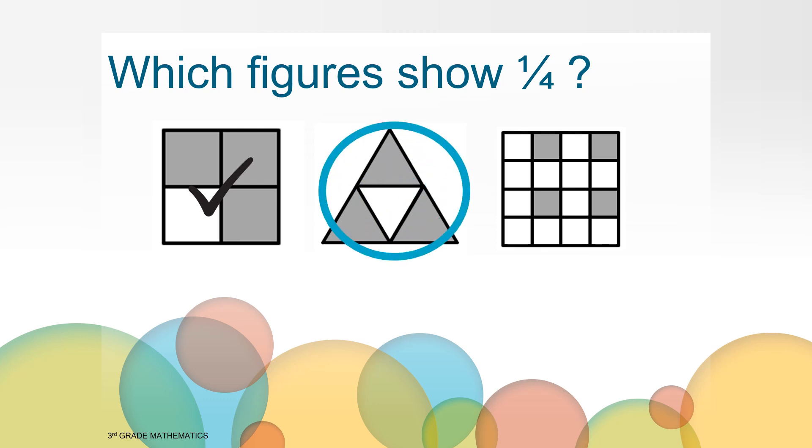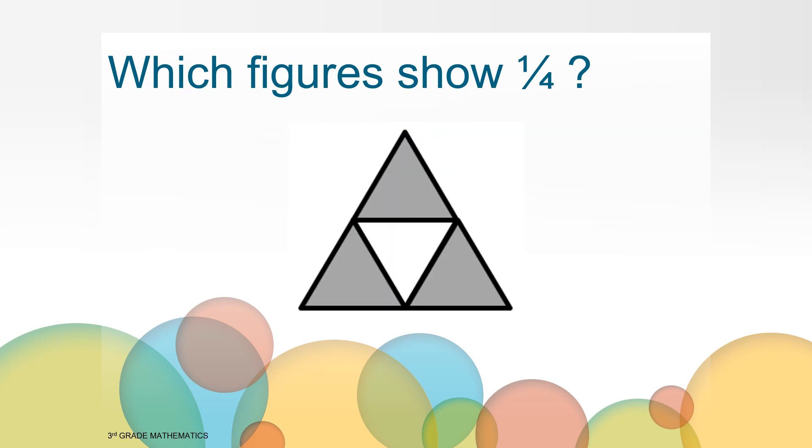Let's look at this next one. What do you notice about this figure? We see a triangle, and that triangle is made up of four small triangles of the same size, so each little triangle is one fourth of the larger triangle. That means that three fourths of the triangle is shaded, and one fourth is not shaded. So yes, again, this does show one fourth.